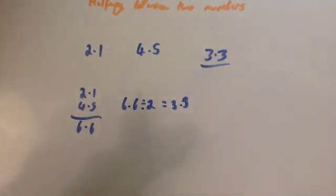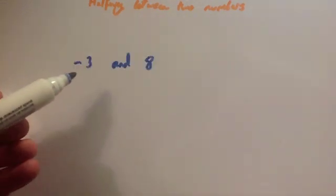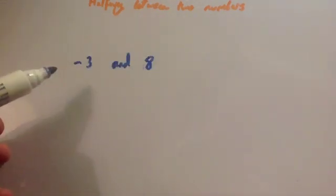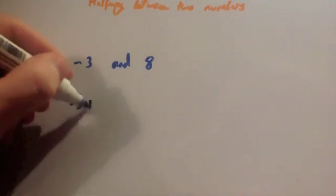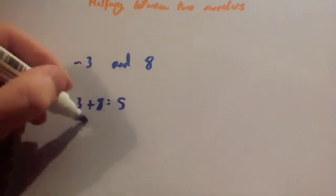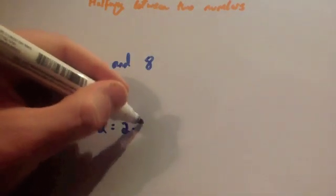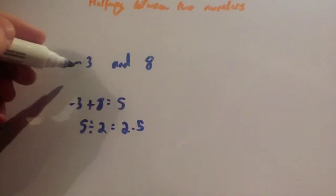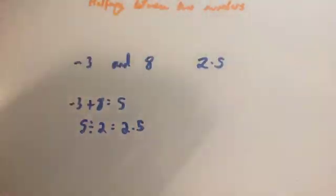That was quite easy. Let's do one last example — let's find halfway between negative three and eight. Add them together: minus three plus eight equals five. Half of five is two point five, so halfway between minus three and eight is two point five. Just add them together and halve it.